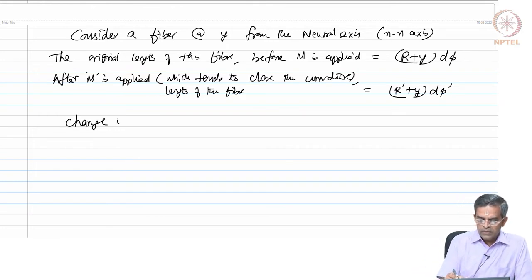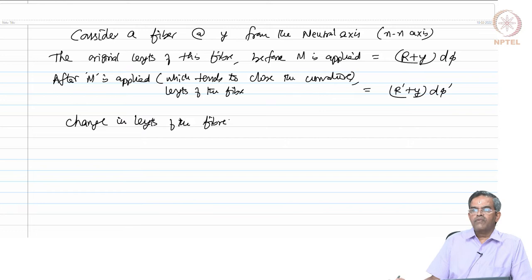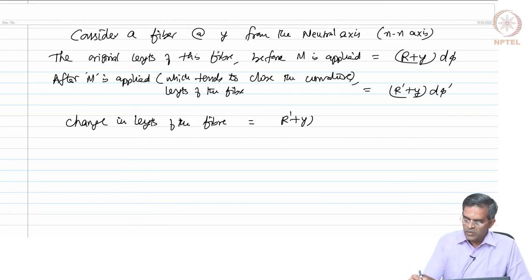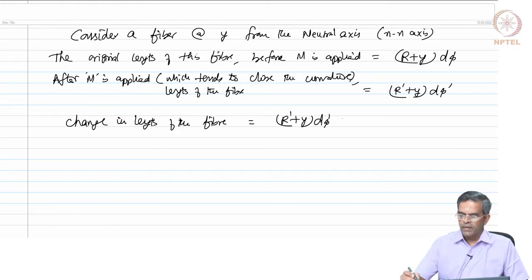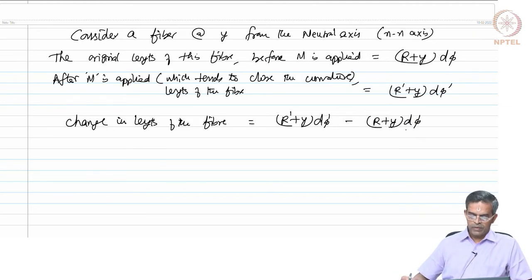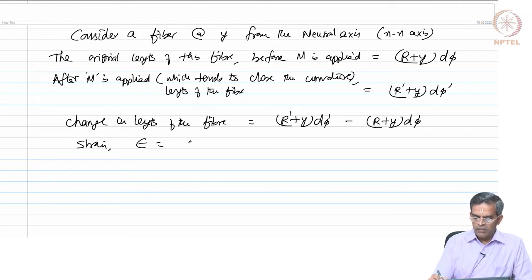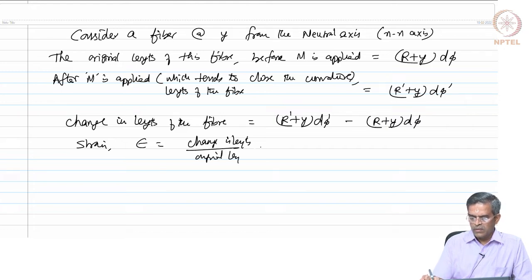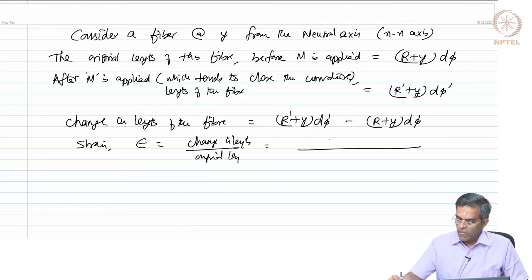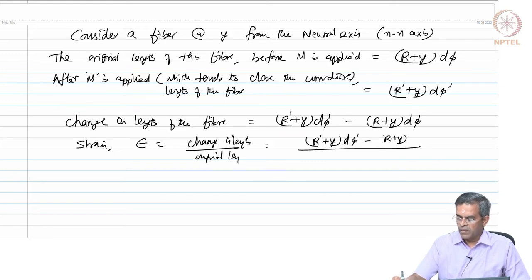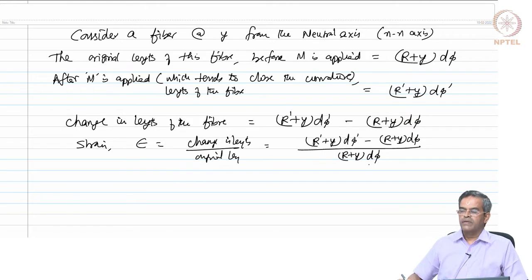Therefore, the change in length of this fibre is (R-prime + y)·d-phi-prime minus (R + y)·d-phi. The strain epsilon is change in length divided by original length, which equals [(R-prime + y)·d-phi-prime − (R + y)·d-phi] divided by (R + y)·d-phi. We call this equation number 1.